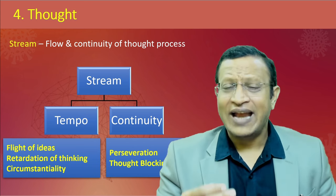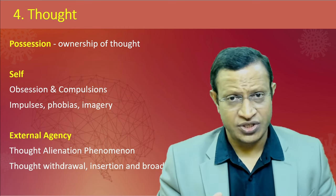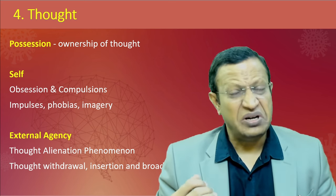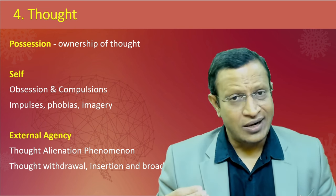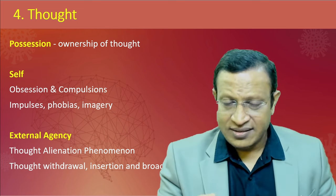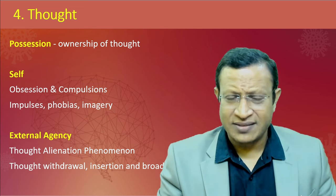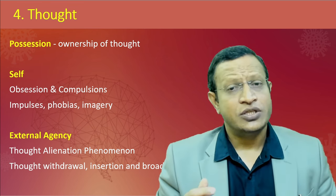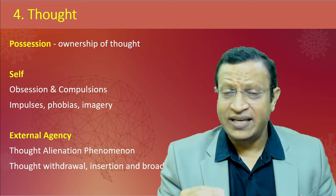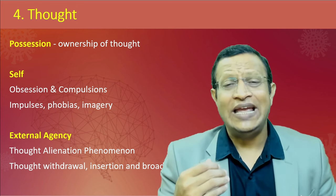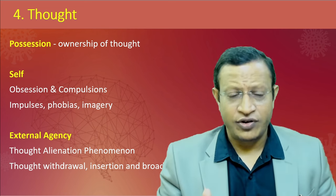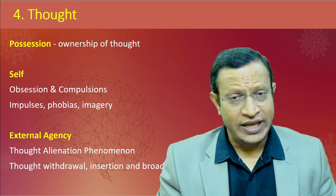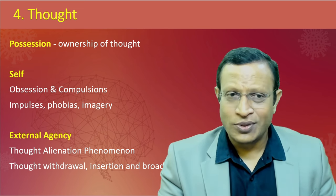Moving to possession of thoughts - who is the owner of this thought? If the patient feels the thoughts are his own but he is unable to control them, those are obsessions. If he is unable to control his actions but knows they are under his will, that is compulsion. The common phenomena under possession include impulses, obsessions, compulsions, phobias, and imageries. If the patient says the thoughts he is getting are not his own but somebody else's, attributed to an external agency - that includes thought insertion, thought withdrawal, and thought broadcast - along with made acts and made effects.